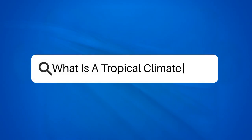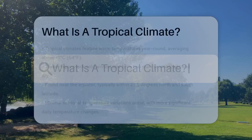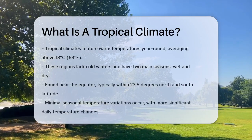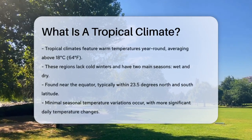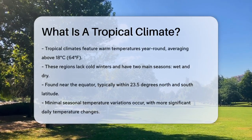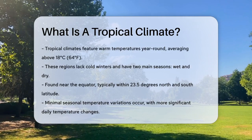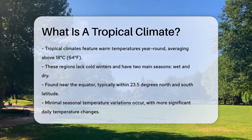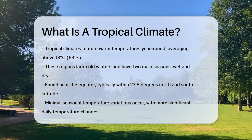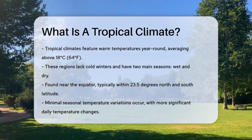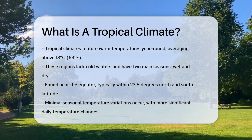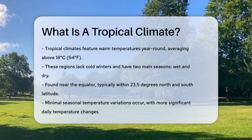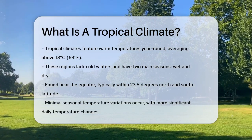What is a tropical climate? Imagine a place where the sun shines brightly all year round and the temperatures are always warm. This is what characterizes a tropical climate. In these regions, the average temperature remains above 18 degrees Celsius, or 64 degrees Fahrenheit, throughout the year.